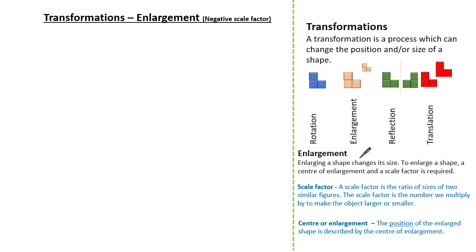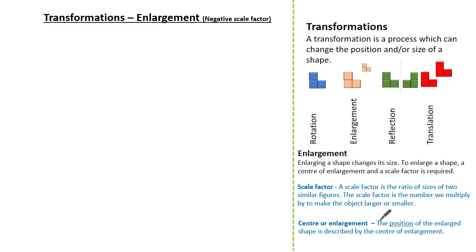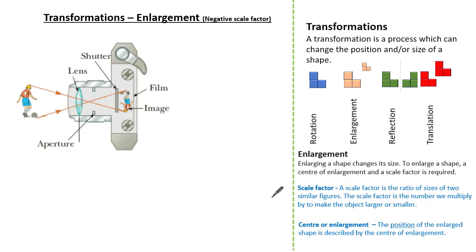Enlarging a shape changes its size. To enlarge a shape, a centre of enlargement and a scale factor is required. A scale factor is the ratio of sizes of two similar figures — it is what we multiply by to make the object larger or smaller. The position of the enlarged shape is described by the centre of enlargement, which we looked at in the previous video. So let's concentrate on a negative scale factor.